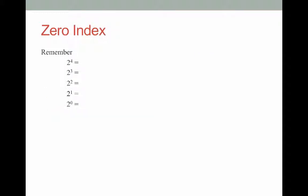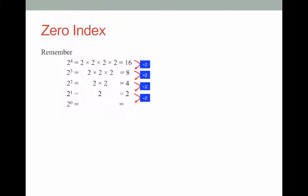Let's take a look at the zero index. Remember some powers of 2: 2 to the power of 4 is 16, 2 to the power of 3 is 8, 2 to the power of 2 is 4, and 2 to the power of 1 is 2. Following that pattern, what should 2 to the power of 0 be? Starting at 16 and dividing by 2 each time gives 8, then 4, then 2 — so keeping the pattern, 2 divided by 2 gives 1.